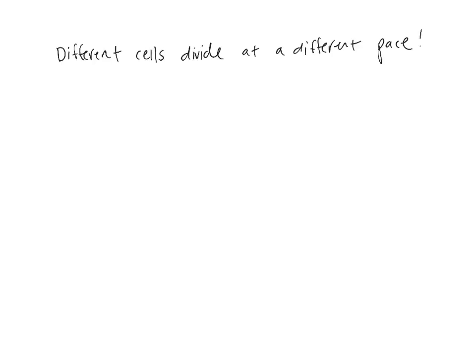One of the main things of this class is that if you change the structure of something, you change the function. That applies in the cell cycle, meaning that different cells have very different structures. Your brain cell is not going to look the same under the microscope as your nerve cell, which isn't going to look the same as a skin cell. So if you change the structure, you change the function — how that cell works — but you also change how it divides as well.